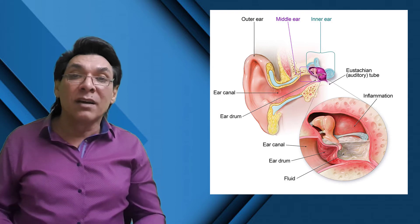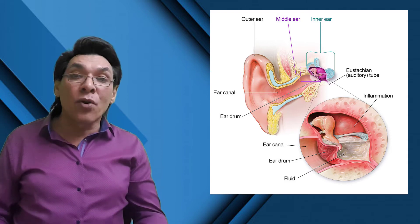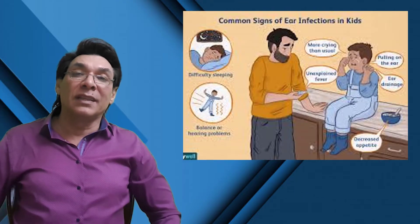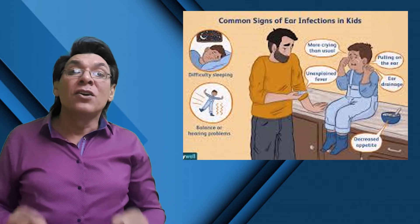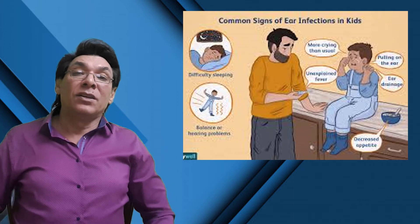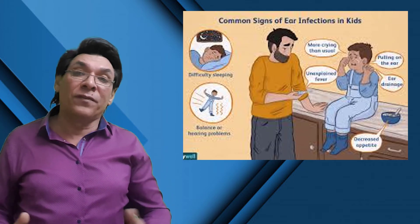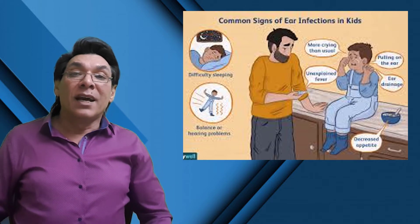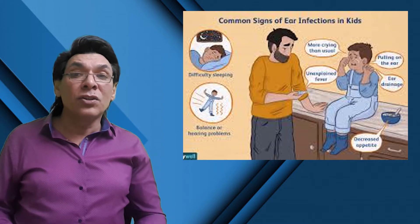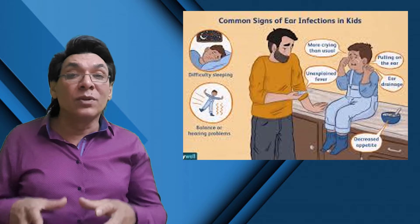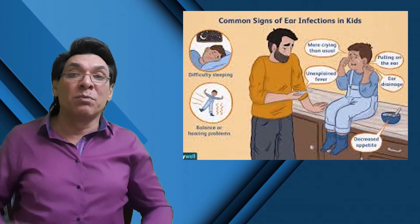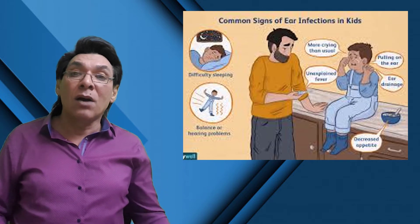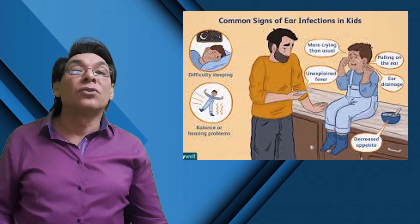Middle ear infections occur because mucus membranes lining the Eustachian tube are continuous with the lining of the middle ear, providing a passageway for bacteria from the throat or nasal passages to the middle ear. Children have shorter Eustachian tubes, so infections are more frequent in children. Insertion of tubes through the tympanic membrane into the Eustachian tube allows the ear to drain.